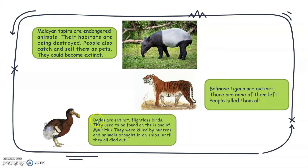The third example is the dodo. Dodos are extinct, flightless birds. They used to be found on the island of Mauritius. They were killed by hunters and animals brought in on ships until they all died out.